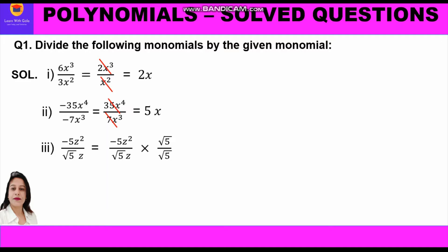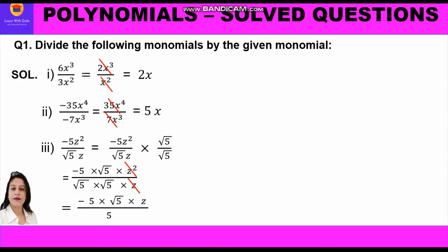The third part is -5z² divided by √5·z. We rationalize by multiplying numerator and denominator by √5, giving -5·√5·√5·z² in the numerator over √5·z·√5. Since √5·√5 = 5, z² cancels with z leaving z, and 5 and 5 cancel, leaving the answer as -√5·z.